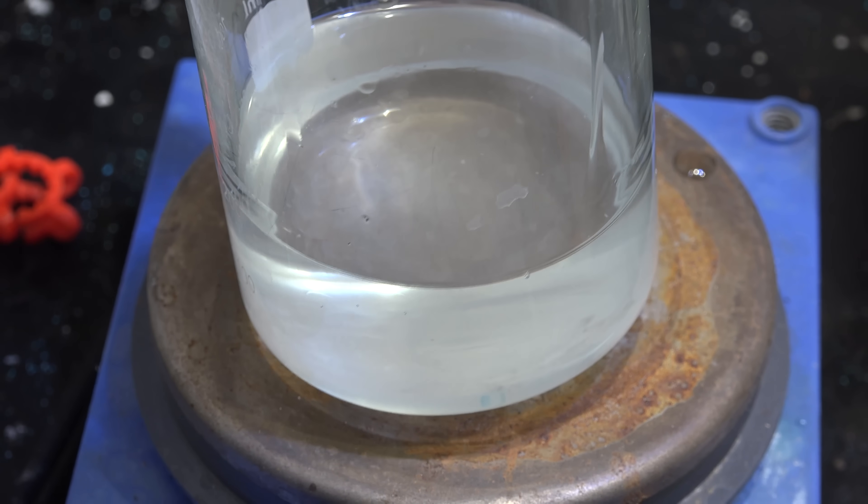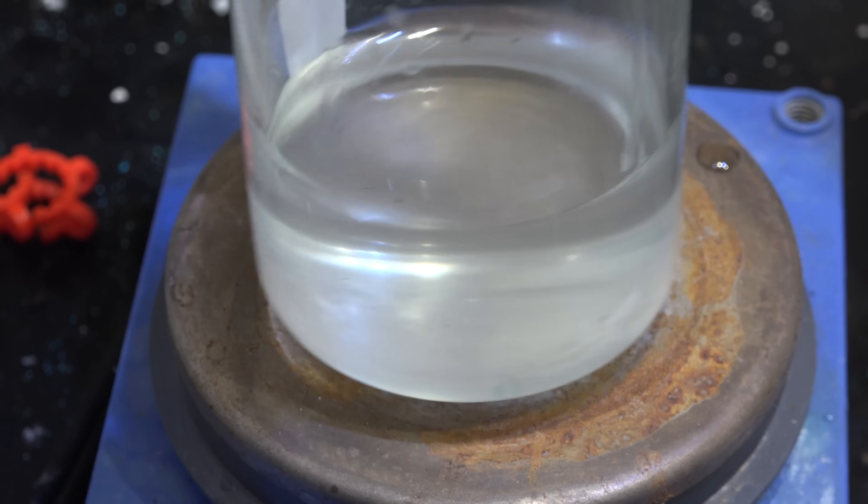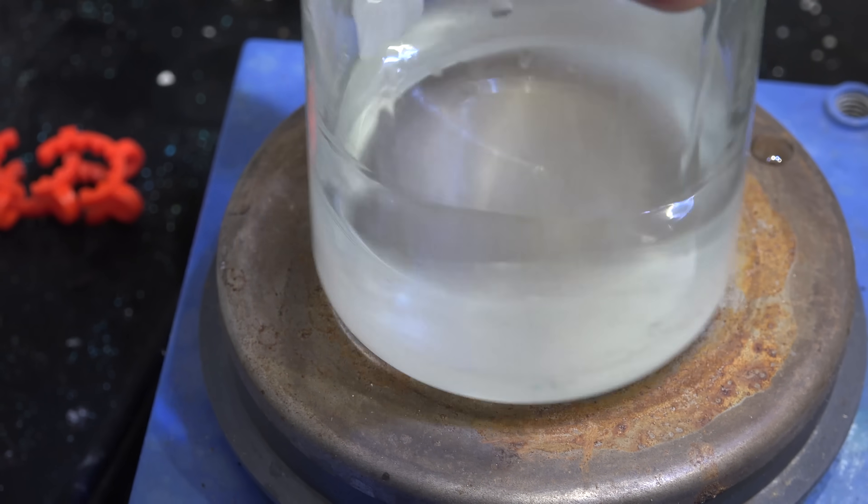And there we have it, a solution of sodium silicate. Now as said before, it will be a viscous syrupy mass. I recommend keeping it in liquid form and pouring off the quantity you need for your experiments.